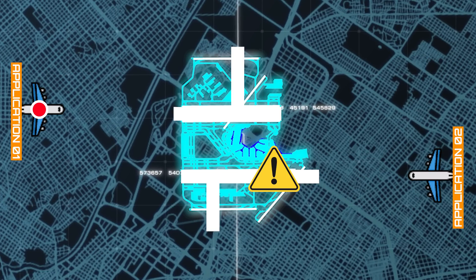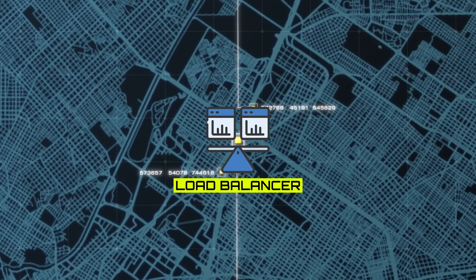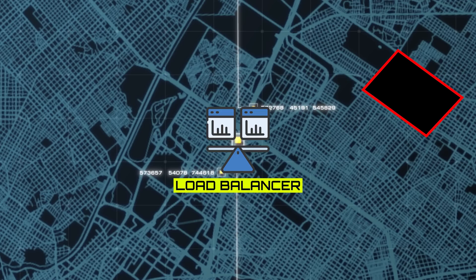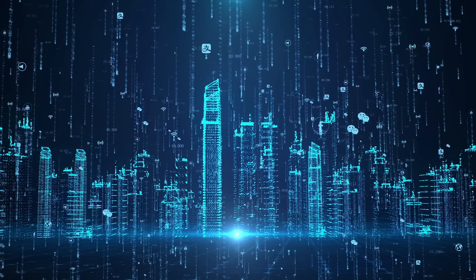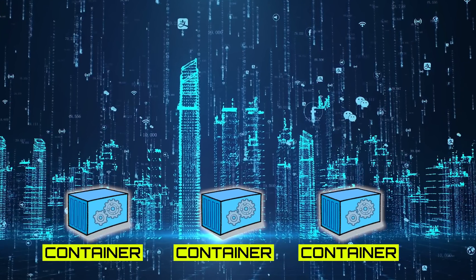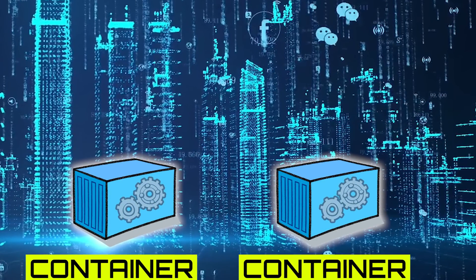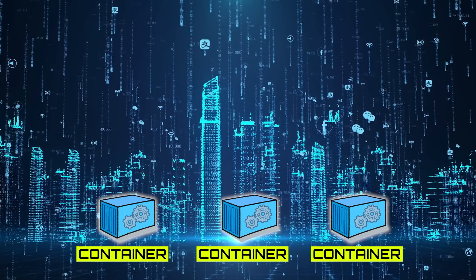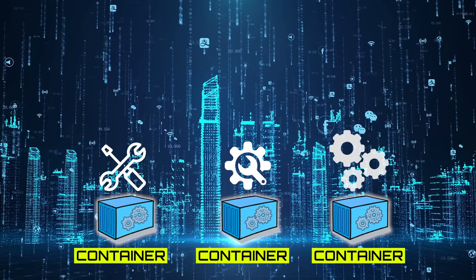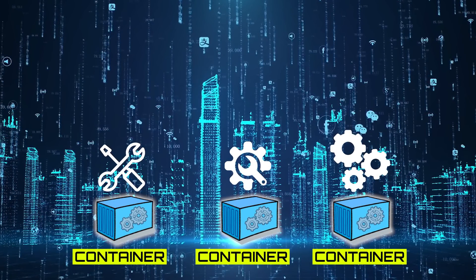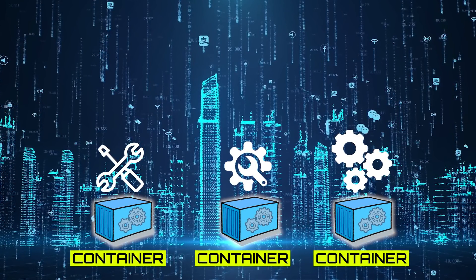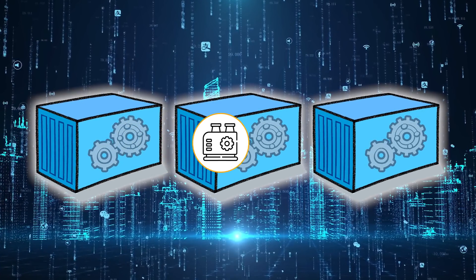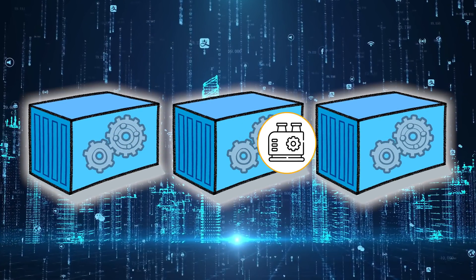But airports have challenges too. What if a runway undergoes repairs or a specific flight needs a specific gate? Similarly, load balancers, while efficient, can face hiccups when services change or require specific handling. To handle the dynamic nature of our digital city, we resort to containers. In the software realm, think of containers as specialized garages for our microservices. Each garage or container ensures that the service it houses is uniform, standardized, and possesses all of the tools and configurations it needs to function optimally. This isolation ensures our microservices run consistently regardless of where they're deployed.